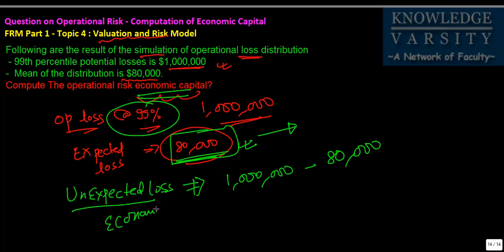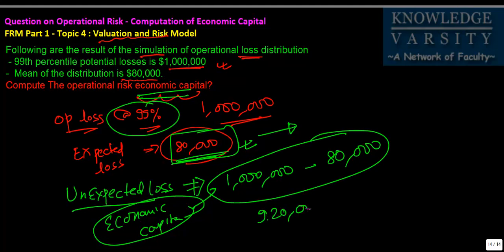If you see, the economic capital that you will keep will be given by 1 million minus 80,000. You will put an economic capital of 920,000 dollars. This is how you will compute.